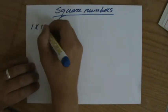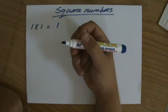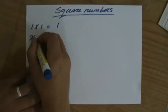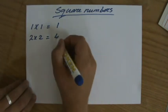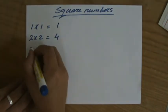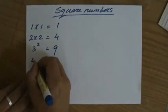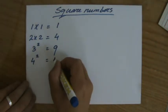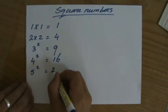So 1 times 1 or 1 to the power 2 is 1. That makes 1 the smallest square number. 2 times 2 is 4, that makes 4 the next square number. 3 times 3, 3 to the power 2, is 9. 4 to the power 2 is 16. 5 to the power 2 is 25.